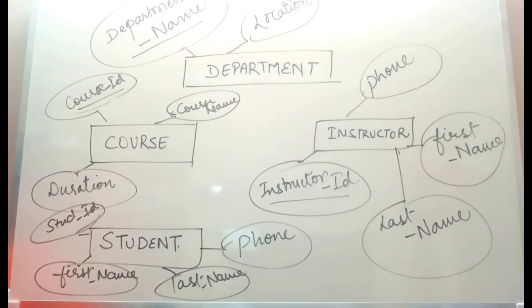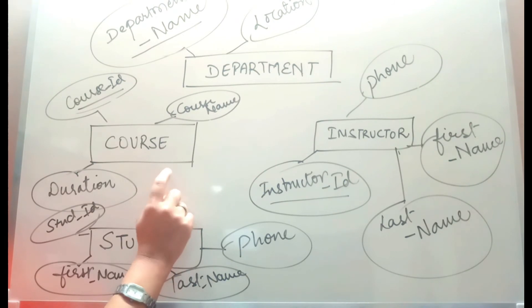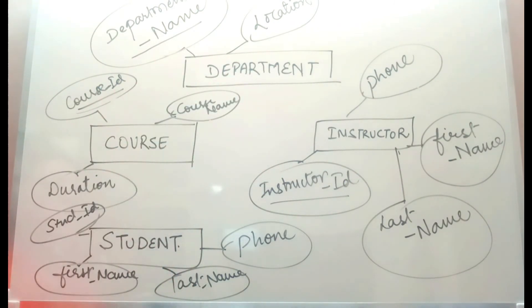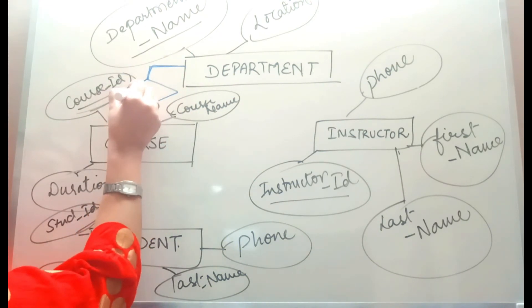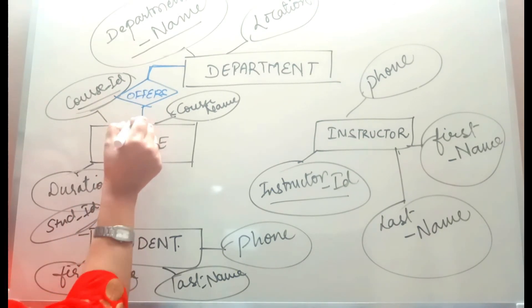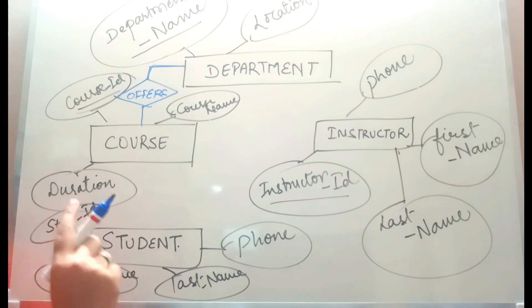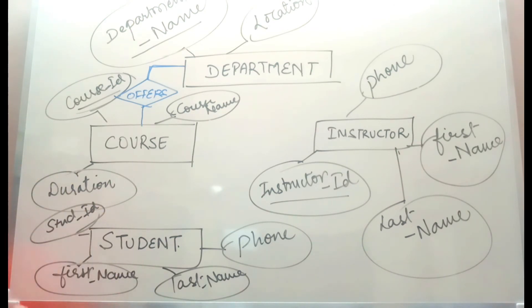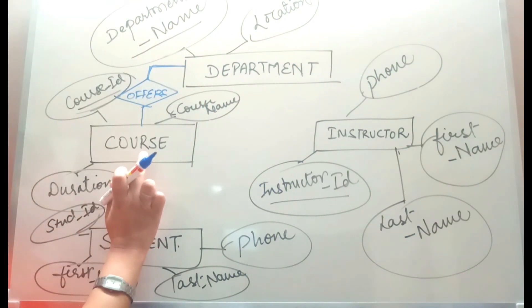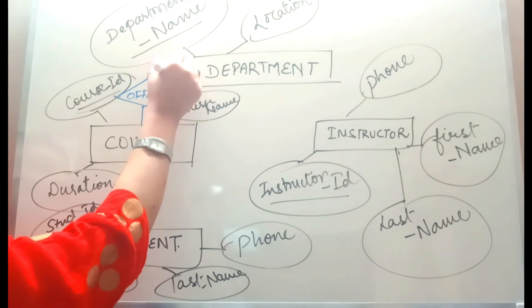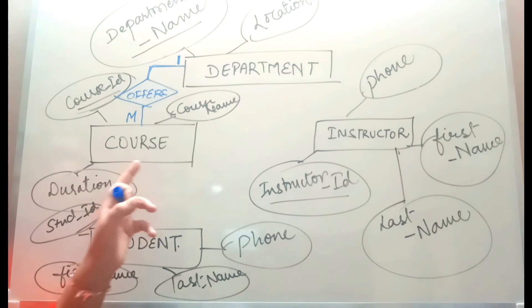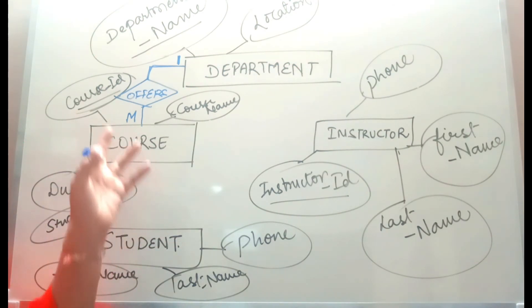Now we will show relationships between these entities and signify which type of relationship each is. Department and course: department offers course, connected through lines with the relationship 'offers' in a diamond shape. The relationship is one-to-many — a department can offer multiple courses — so we put 1 on the department side and M on the course side.